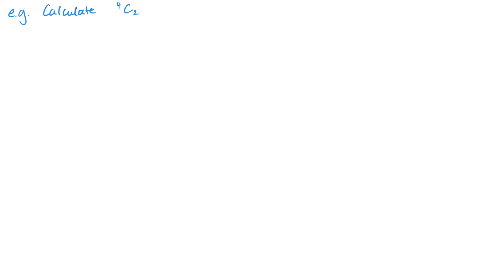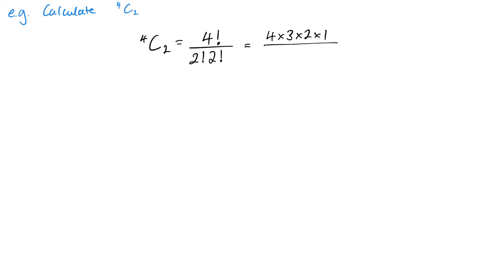Now this is 4 choose 2. To do this, I need to first set it out: we get 4C2, which is 4 factorial on top, then r factorial which is 2 factorial, and then n minus r gives the next one — so that's also 2 factorial. You'll notice these two values on the bottom will always add up to the top value. If I expand this manually, I'd start by canceling: two twos is four, then we've got 3 times 2 on top which is 6, and the rest is ones which don't change the answer.